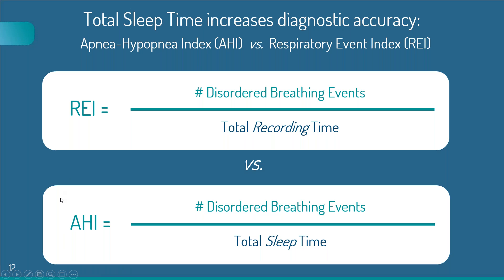WatchPat stands in contradistinction to most other home testing units, which may count up the sleep disorder breathing events but divide those events by total recording time rather than total sleep time. Because recording time is always greater than total sleep time, the ability of these devices to detect and classify patients with mild, moderate, and severe sleep apnea is somewhat reduced or less sensitive than the WatchPat device.